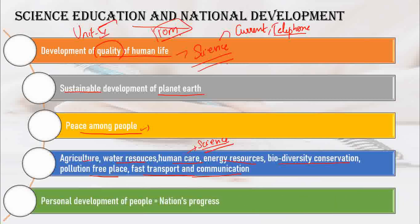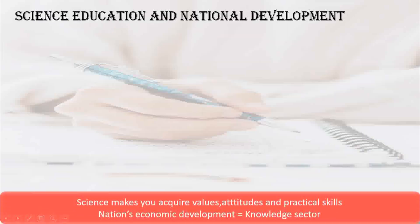Next is the personal development of the people, which leads to the progress of the nation. Only when there is personal development will the whole nation progress. Science makes you acquire values, attitudes and practical skills. Science and economic development are linked — when people develop in the knowledge sector, the nation progresses.